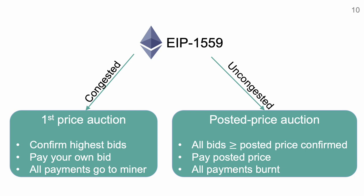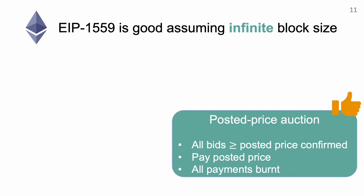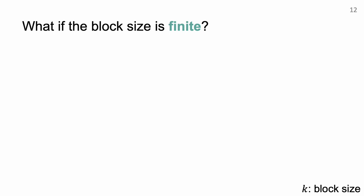You may find this burning rule quite interesting, as it typically does not appear in classical mechanism design. We will later show that this burning rule is necessary to guarantee incentive compatibility properties. Roughgarden showed that EIP-1559 is good if we assume an infinite block size, or equivalently when there is no congestion — posted price with burning satisfies all three properties under infinite block size. However, in practice we may not always have infinite block size; congestion can happen, for example when there is an NFT mint or a sudden cryptocurrency price change, dramatically increasing the number of transactions waiting to be confirmed.